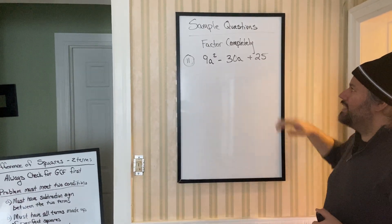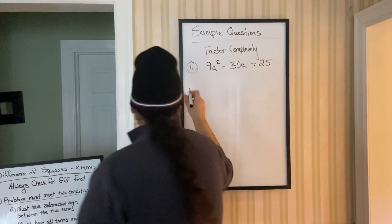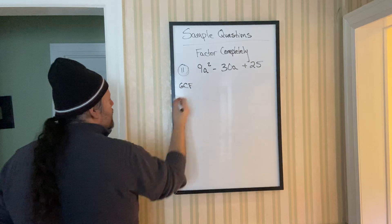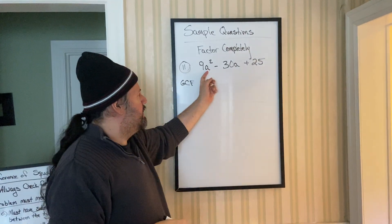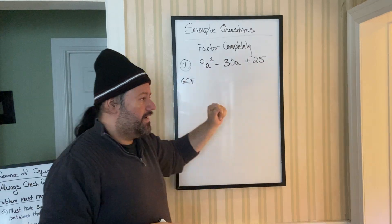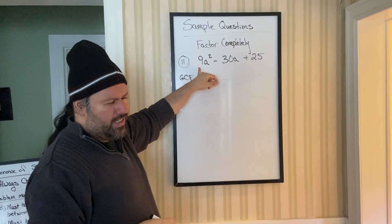The first thing that you would do when it says factor completely is to ask yourself is there a GCF? And we can see no matching set of parentheses, letter, letter, no letter.